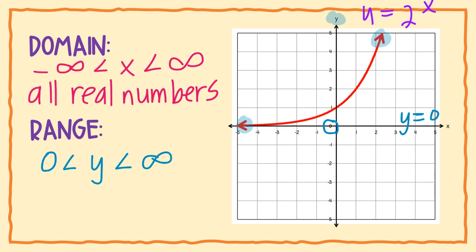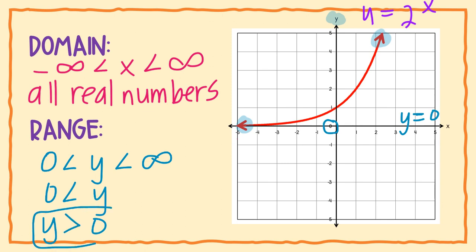Since y equals 0 is the asymptote, the function never crosses or touches that line. So our range is 0 is less than y is less than positive infinity, which simplifies to y is greater than 0. And our domain was all real numbers.